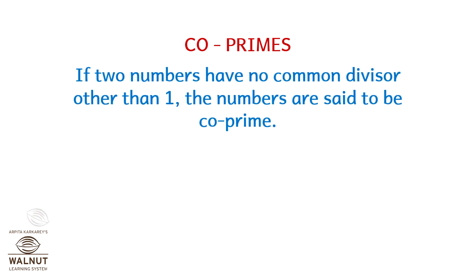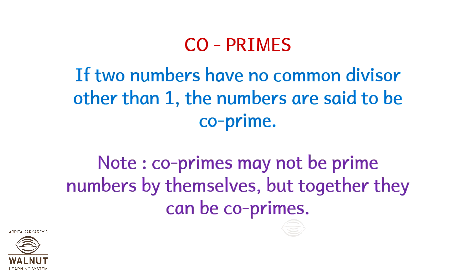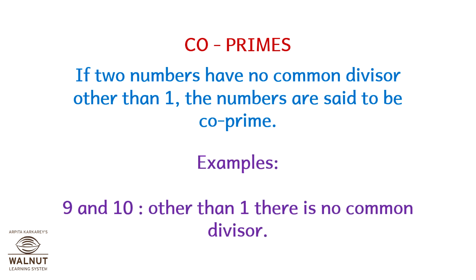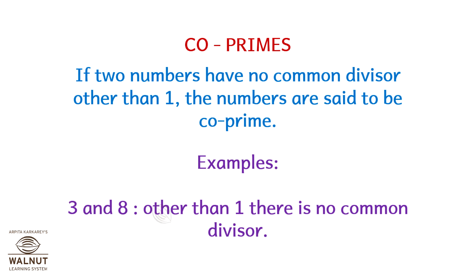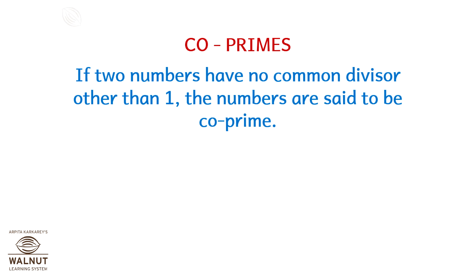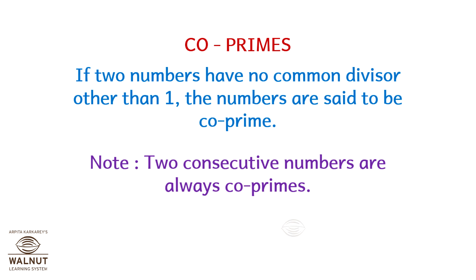Let's look at coprimes. If two numbers have no common divisor other than 1, the numbers are said to be coprime. Note: coprimes may not be prime numbers by themselves, but together they can be coprimes. Examples: 9 and 10 — other than 1, there is no common divisor. 3 and 8 — other than 1, there is no common divisor. Note: two consecutive numbers are always coprimes.